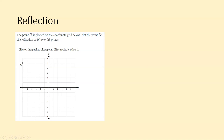The point N is plotted on the coordinate grid — plot point N prime, the reflection of N over the y-axis. Axes can also serve as lines of reflection, so sometimes you'll be given a line and sometimes it'll just tell you to reflect over an axis. Here we have the y-axis, and we want to reflect point N over it. N is at negative 6 comma 5, so N prime should go six points away on the other side.